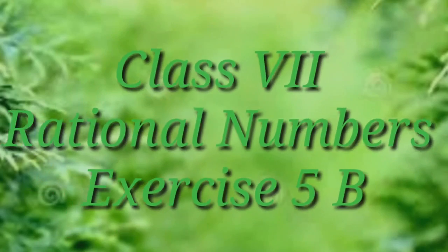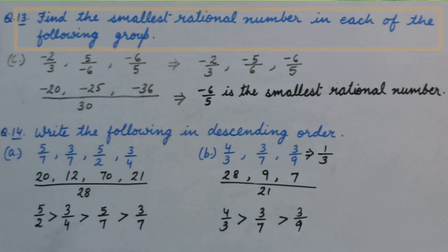Good morning students. Let's continue exercise 5B, question number 13. Find the smallest rational number in each of the following group.